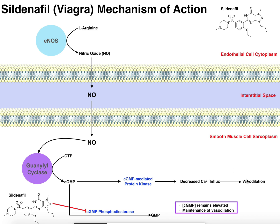So this is the mechanism of sildenafil or Viagra: it keeps cyclic GMP levels elevated for a longer period of time by inhibiting the phosphodiesterase, giving you prolonged vasodilation. Hopefully this video gave you some intuition on the mechanism of action of Viagra. Thank you very much.